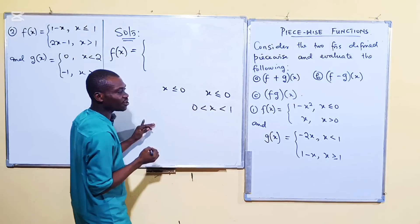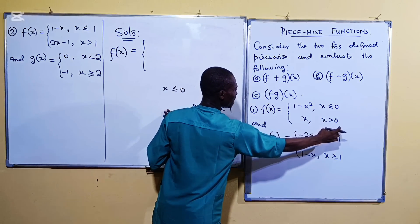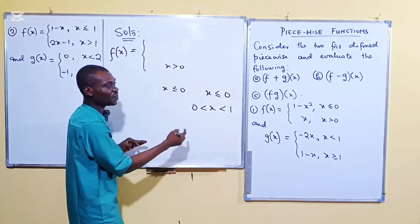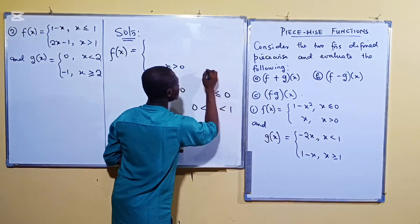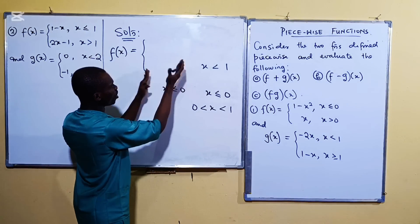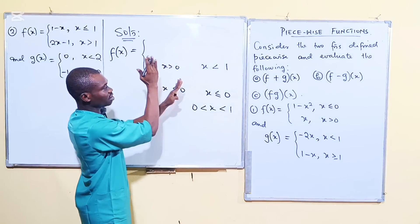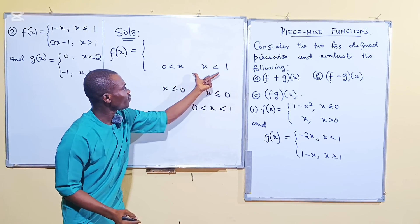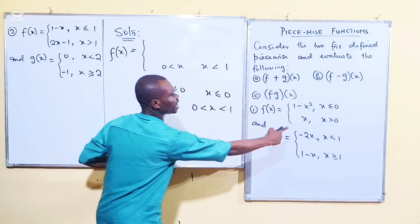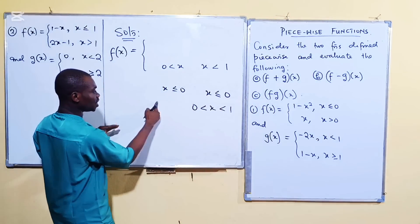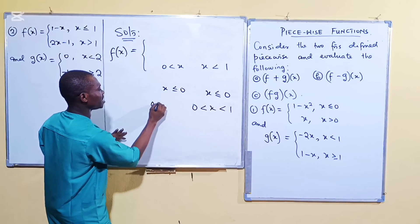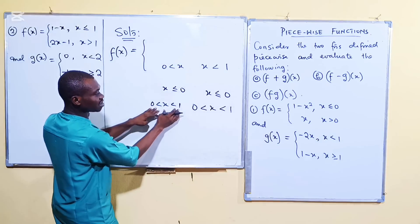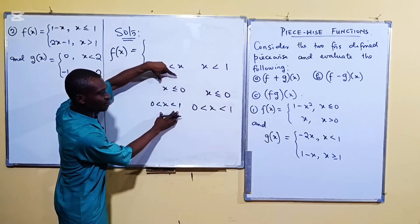Why 0 < x < 1? In the second case for f, x is strictly greater than 0. For g, the first piece covers x < 1. So combining these, we capture 0 < x < 1. This interval sits between the two original boundary points. You can verify: 0 < x captures the lower part of f's second piece, and x < 1 captures the upper part of g's first piece.